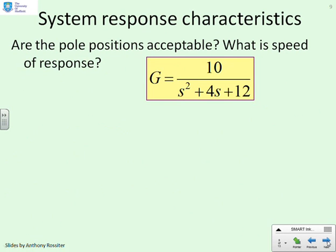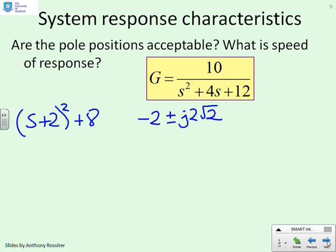Some examples, then, to go through this. Are the pole positions for the following system acceptable or not? And what sort of speed of response will you get? So let's write this out in the standard quadratic form. So you've got s plus 2 all squared plus 8. And therefore, you've got roots at minus 2 plus and minus j root 2. And what you'll notice here is that the imaginary part, so you've got omega, is bigger than a. So for this particular example, you would expect the oscillation to dominate the decay, but only just, not by much, just by a little bit. You also can see that the real part is minus 2, so the time constant is going to be a half. OK? So you expect it to settle in approximately 2 seconds.